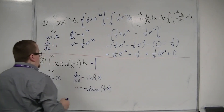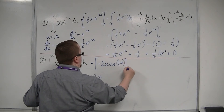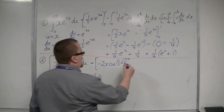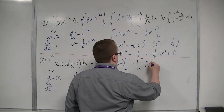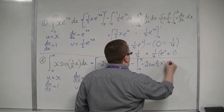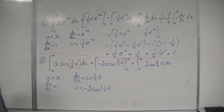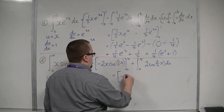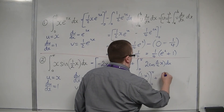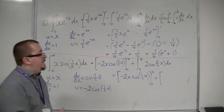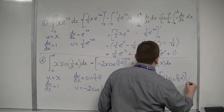So this integral is u times v: minus 2x cos of one half x, evaluated between 0 and pi. Take away the integral between 0 and pi of v du by dx, so minus 2 cos of one half x dx. Now we've got two minuses there, so they cancel each other out and become a plus. And 2 cos of one half x integrates to 4 sine of one half x, evaluated between 0 and pi.